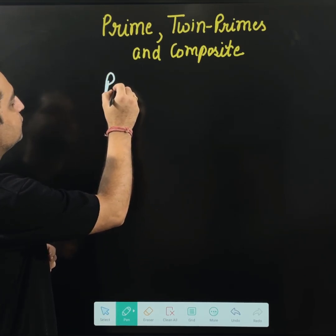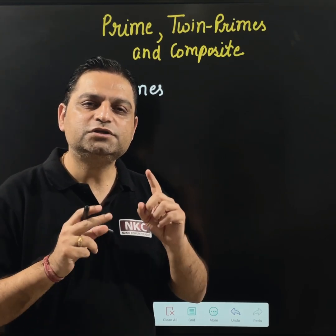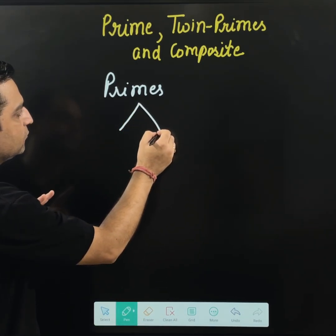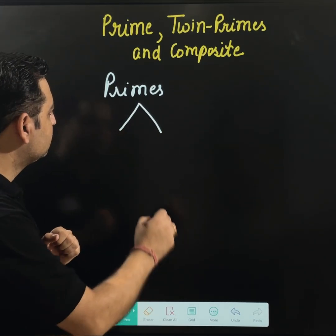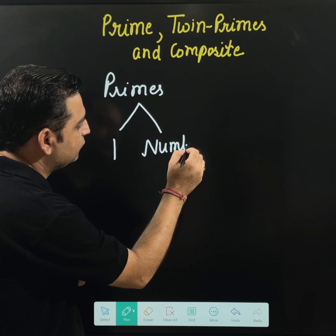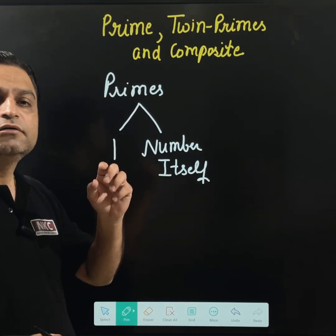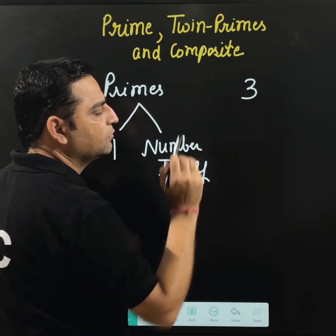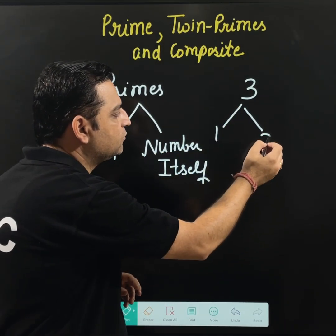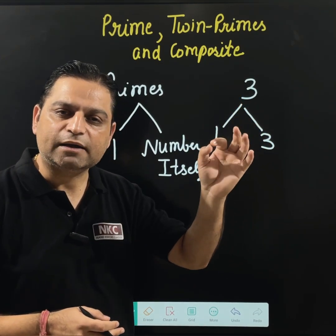I am going to start from primes. First of all, prime numbers are those numbers which have only two factors. And what are those two factors? One factor is 1 and the second factor is the number itself. For example, 3 is a prime. 3 can be divided by 1 or 3 can be divided by 3. When this is the situation, then the number is a prime number.